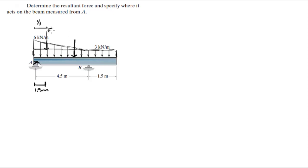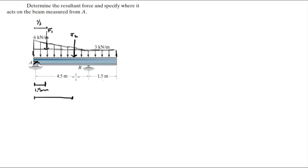Let's call this F1 and let's call this F2. F2 acts right in the middle of the rectangle. The whole rectangle is 4.5 plus 1.5, which is 6, and half of 6 is 3 meters.